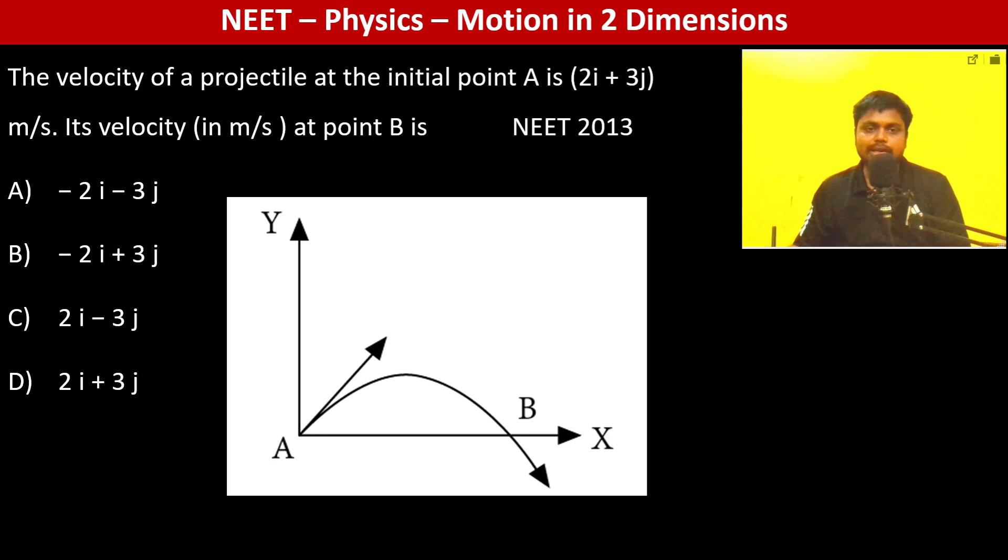The velocity of a projectile at the initial point A is 2i + 3j m/s. Its velocity at point B is what we need to find. So here the velocity is 2 i cap plus 3 j cap - that means in this direction it's 2 and in this direction it's 3.